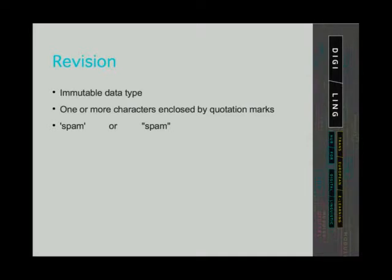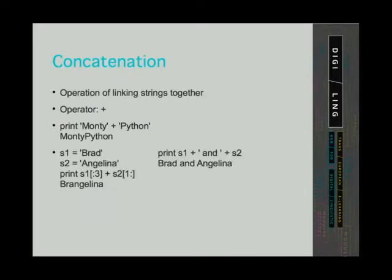Now we can go to learning something new. One thing we can do with strings is concatenation. Concatenation is an operation of linking strings together. For this operation we use the operator plus. In the first example you can see that we concatenated a string Monty and a string Python. This operation just glues the second string on the first one.